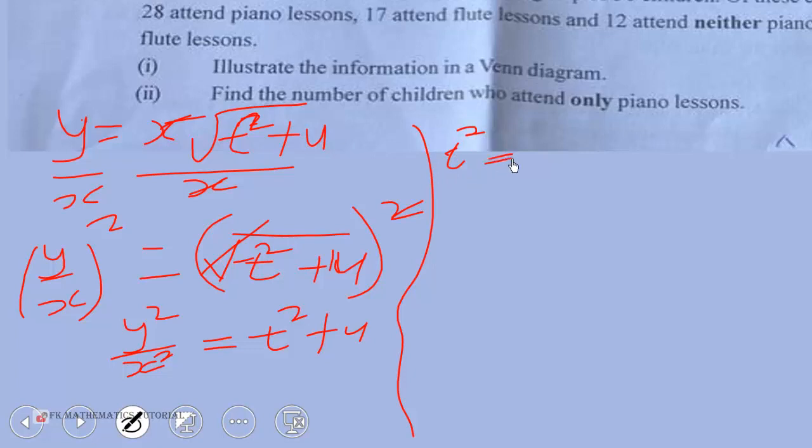You make t squared the subject. T squared will be equal to y squared. I'm just swapping it. I'm not changing it. I'm sending the u to this side to become negative. So, y squared over x squared minus u.